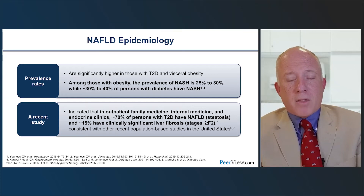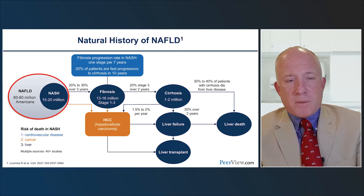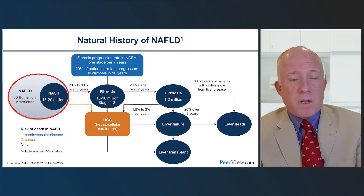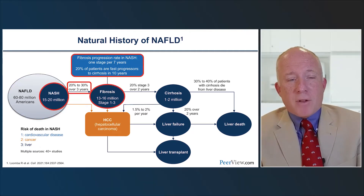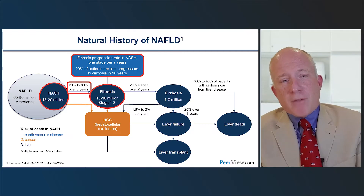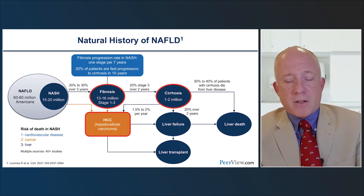We need to think about how to identify our patients before they have NASH and reduce the significant liver disease associated with it. Looking at the natural history of NAFLD, there are 60 to 80 million Americans with NAFLD — probably more since we don't identify everyone. Of those with NASH, up to a third will start developing fibrosis over the next three years, with disease advancing a stage every seven years, potentially progressing to cirrhosis or hepatocellular carcinoma.